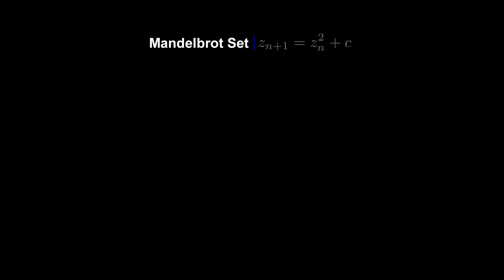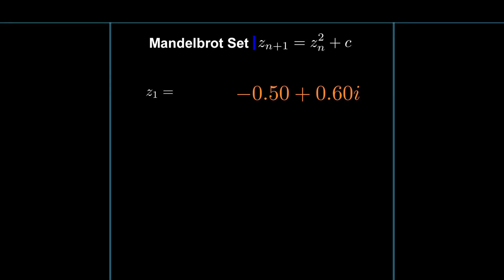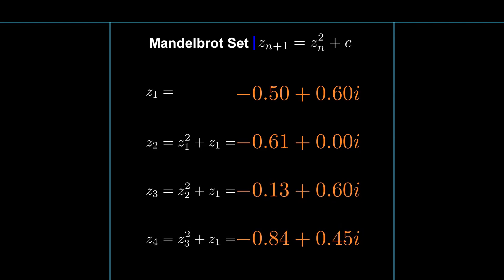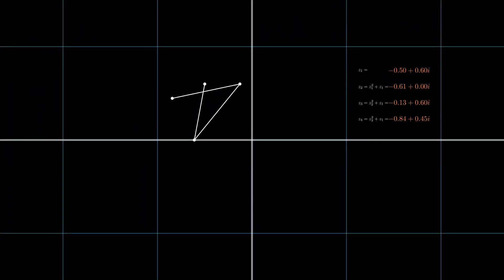The Mandelbrot set is defined by iterating this equation and seeing whether the long term behavior is bounded. Let's check if -0.5 + 0.6i is in the Mandelbrot set. By using the equation, we can find our second value, and third value, and so on. But what we are interested in is again, the long term behavior.